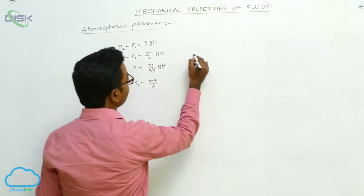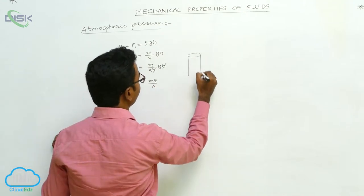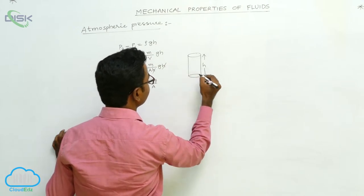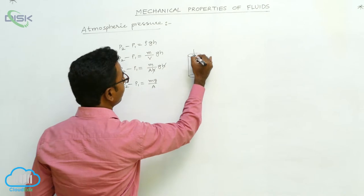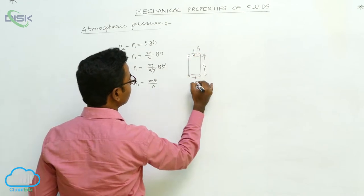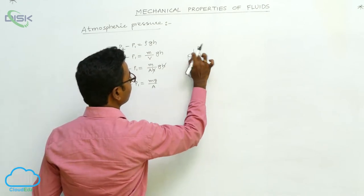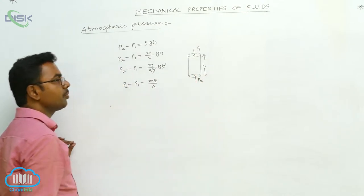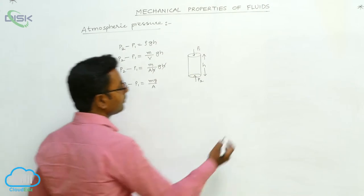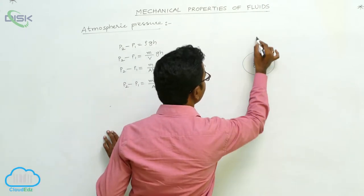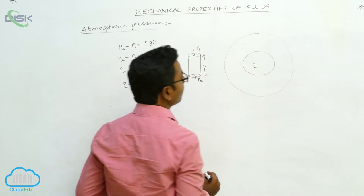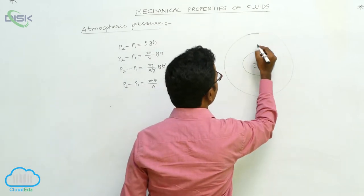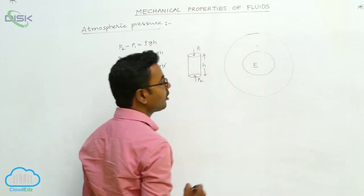Now for a fluid, inside a fluid, if we imagine a cylinder of height H, on the top surface pressure is P1 and on the bottom surface pressure is P2. Now if we imagine it is Earth, around Earth, atmosphere is extending up to a certain height. Here we want to find the atmospheric pressure.